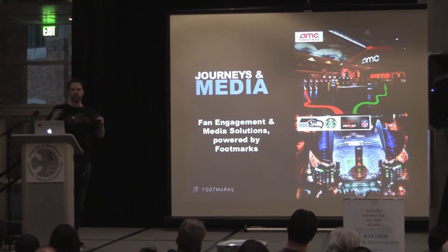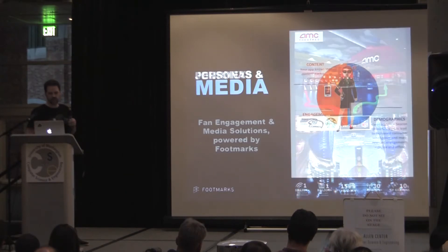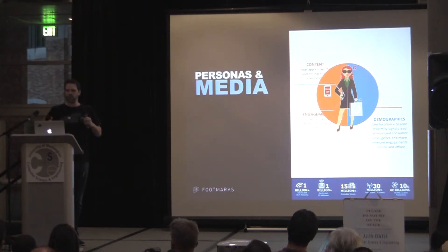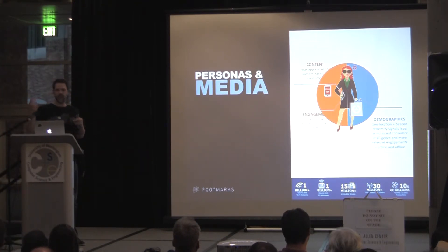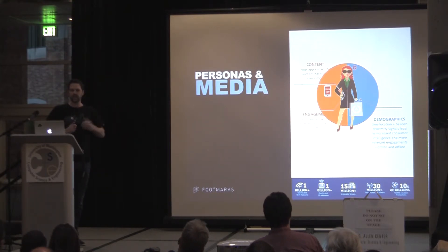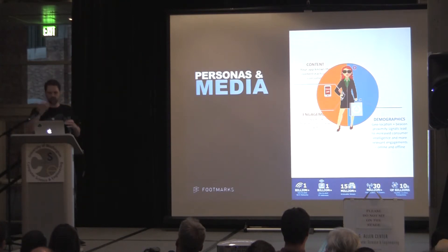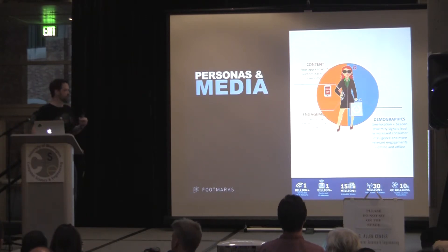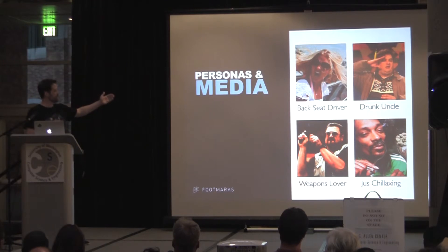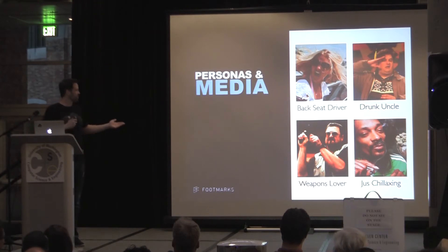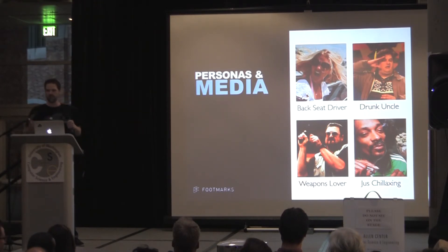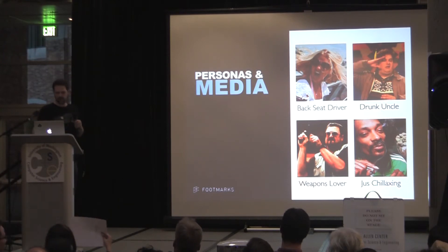Another challenge we look to solve is personas and media. With personas, we understand who you are by looking at the apps you have on your phone, how often you use them, along with geofencing data and beacon data. We build these personas to understand more context around who you are so when you walk into a space, we can provide better engagements. For example, if you happen to be categorized as a 'drunk uncle' or 'just chillaxing,' Pizza Hut may be interested in engaging with you. And if you're a weapons lover, that'd be fitting for the current political climate.